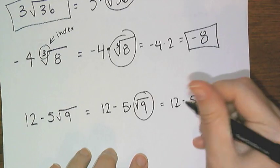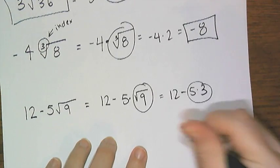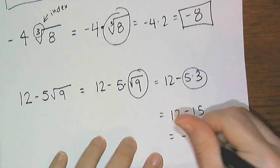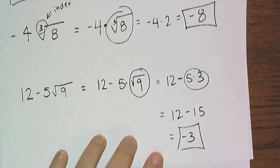And then I do multiplication first, and so I get 12 minus 15. And then, finally, I get negative 3.